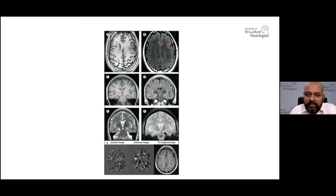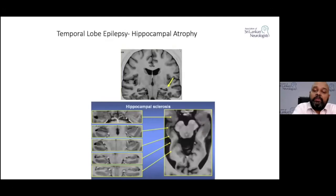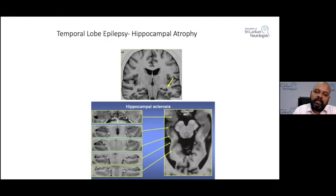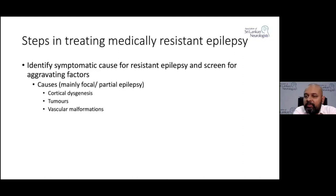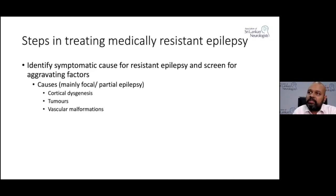Just because you see hippocampal sclerosis on MRI does not necessarily mean the seizures are caused by it. Sometimes we erroneously attribute focal onset epilepsy to hippocampal sclerosis when that may not be the case — for example, hippocampal sclerosis can result from any perinatal insult, and the patient may in fact have non-epileptic seizures. You need to bear that in mind.